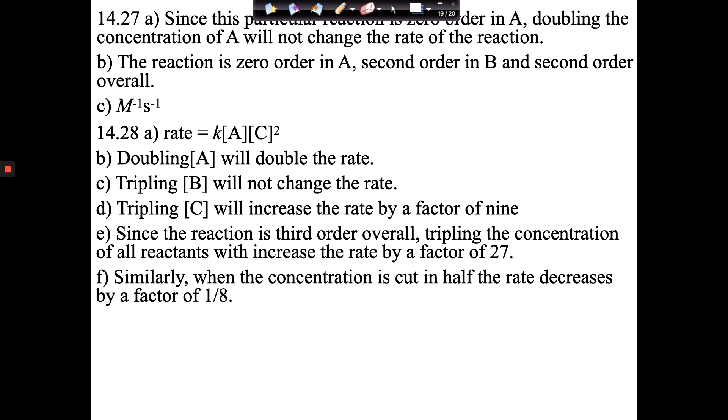And so specifically on number 27, it says we've got a reaction that is zero order in A, second order in B, and second order overall. So the rate law would look like this. We'd have K, and it's zero order in A, which means A doesn't get included. But then it's second order in B like so.